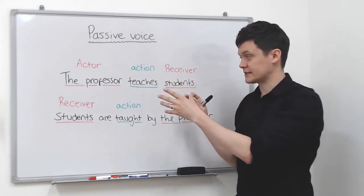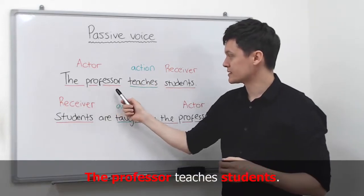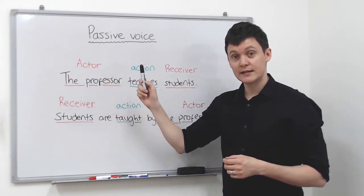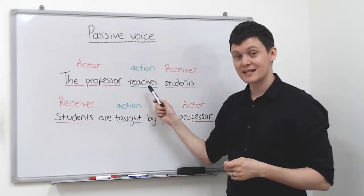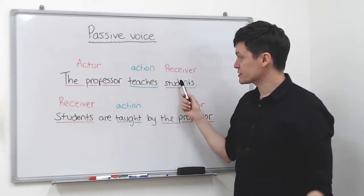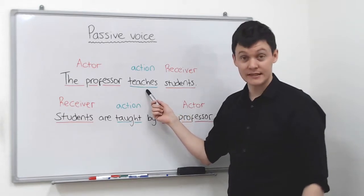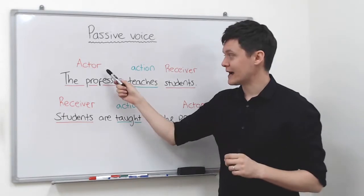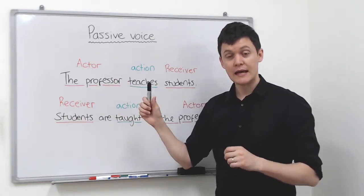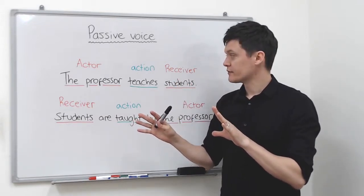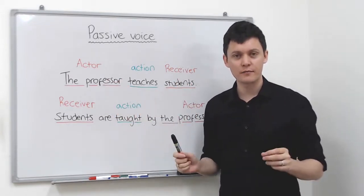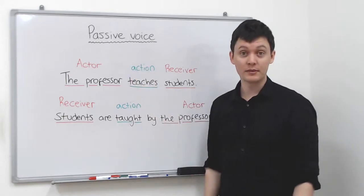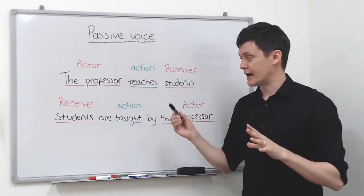Let's look at this sentence I prepared here: the professor teaches students. The professor is the actor — the professor does this action. The students are the receivers — they receive this action. Simple sentence, actor and receiver. Notice the actor is in the subject position, and this is the most common case. To have the actor in the subject position is by far the most common, and it's called the active voice — the opposite of what we're studying today.